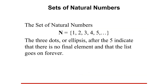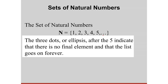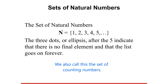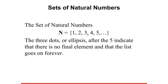Now let's discuss the set of natural numbers, denoted by N = {1, 2, 3, 4, 5, ...}. The ellipsis after 5 indicates there is no final element and the list goes on forever. We also sometimes call these the counting numbers, because when you count you always start with 1 and the numbers continue indefinitely.